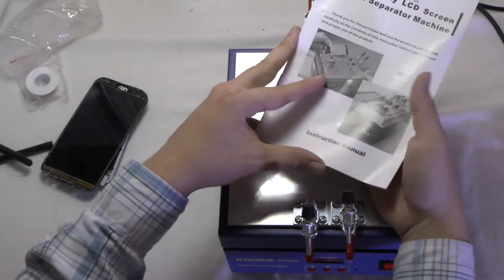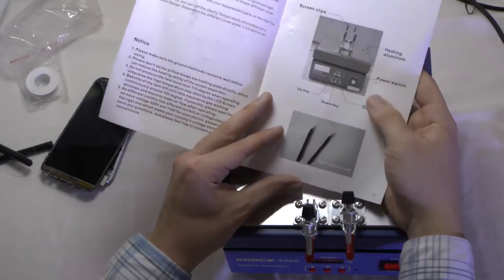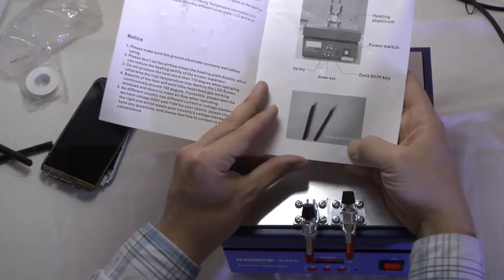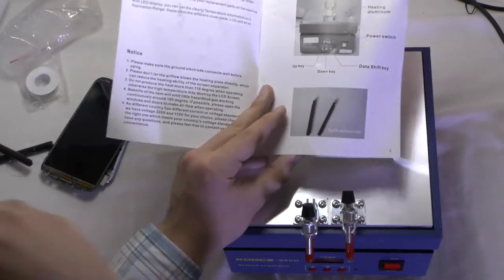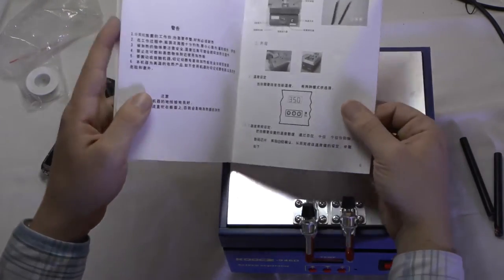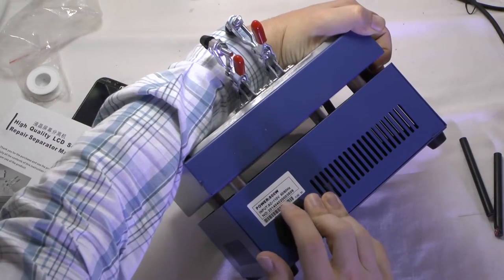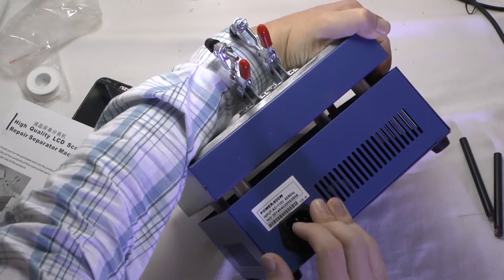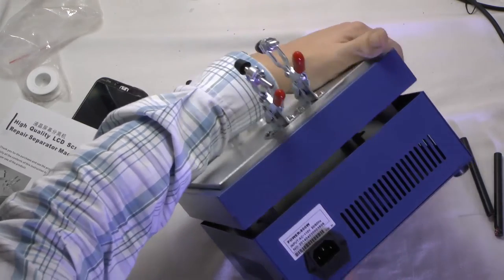It has a manual that is very self-explanatory how you have to use it and the split screen bar that I show you here and everything that you have to keep in mind. There are two models. One is 110 and the other is 220. It depends on the country that you are in. You have to ask for the right machine for you.